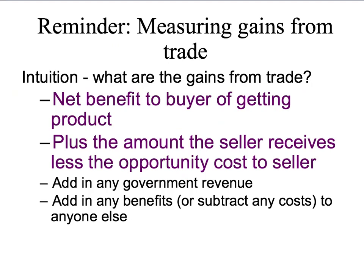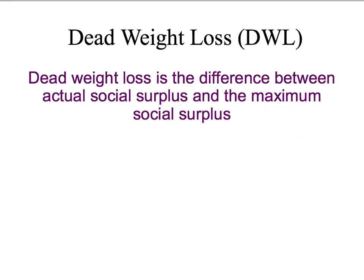By now you can probably recite gains from trade in your sleep. But just to remind you once more: they have a net benefit to buyers, plus the net benefit to sellers — that's the amount the seller receives minus their opportunity cost — plus any government revenue, and plus any benefits or minus any costs to anyone else. We're going to define deadweight loss as simply the difference between the actual social surplus and the maximum social surplus.